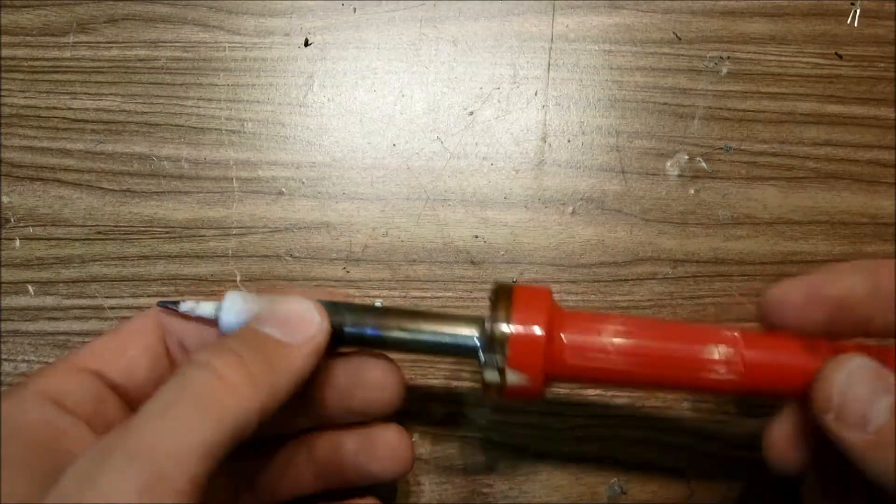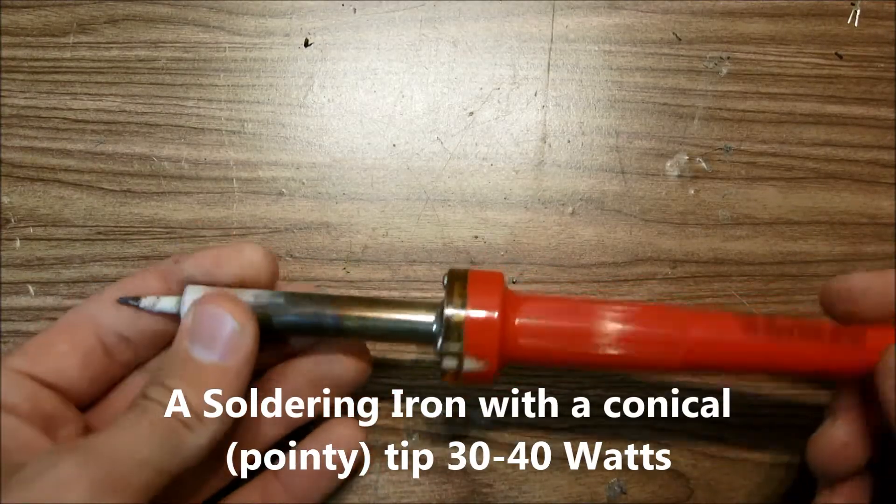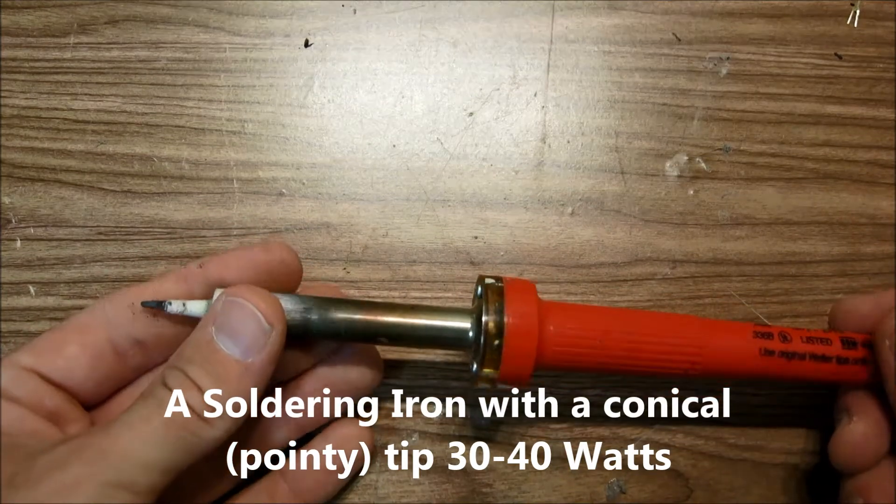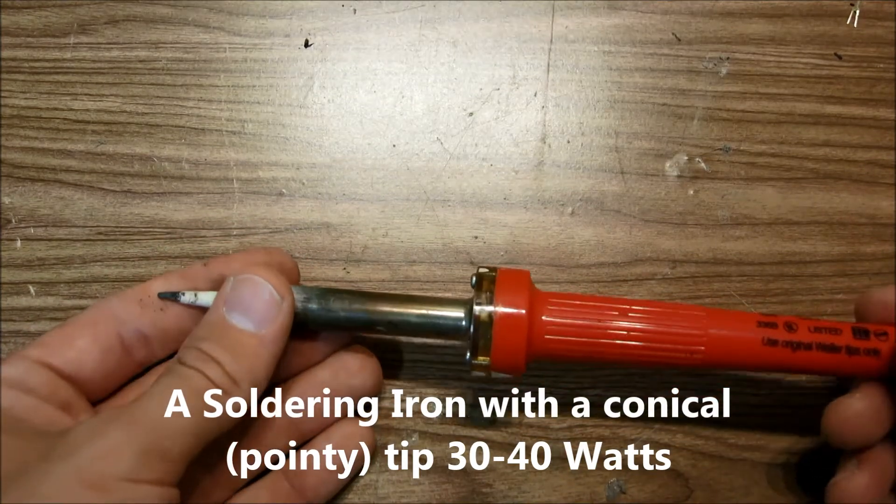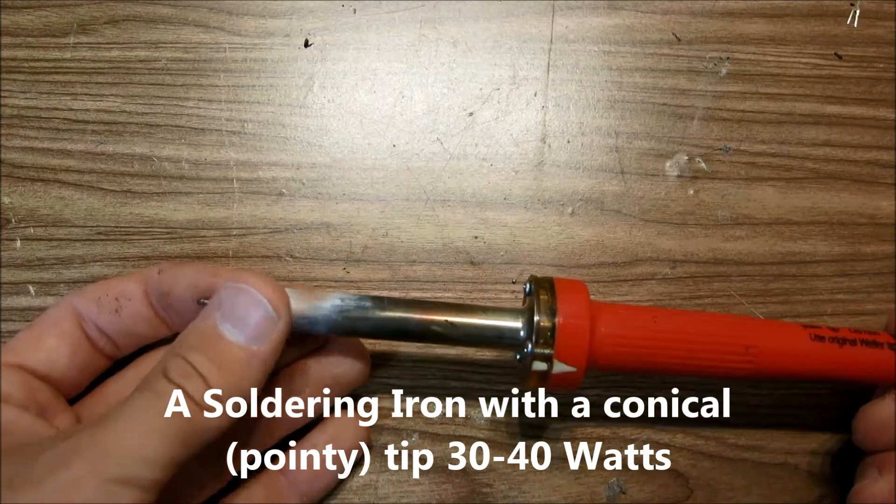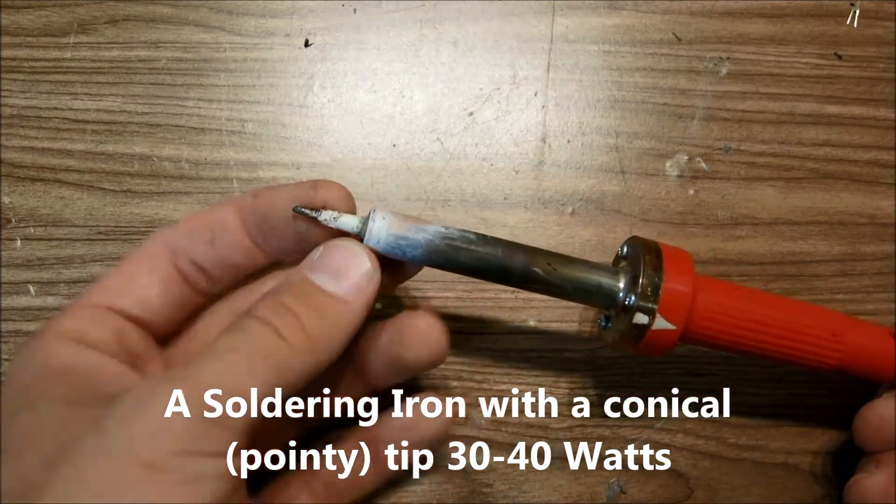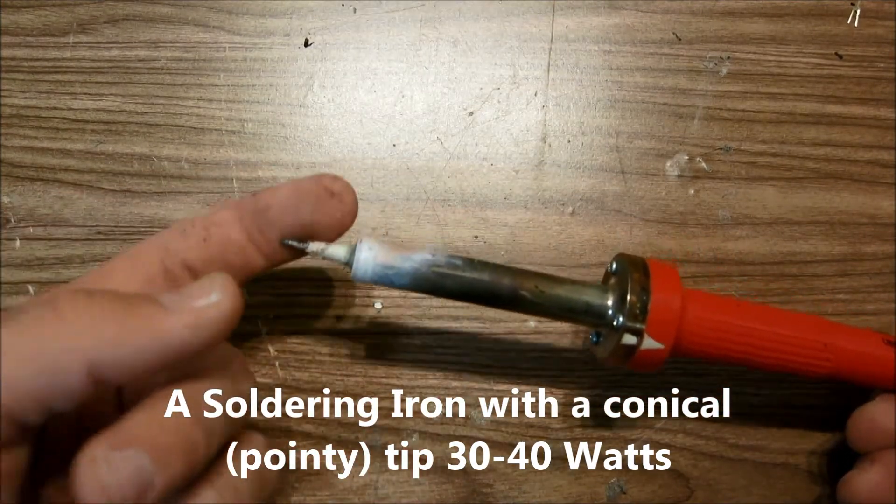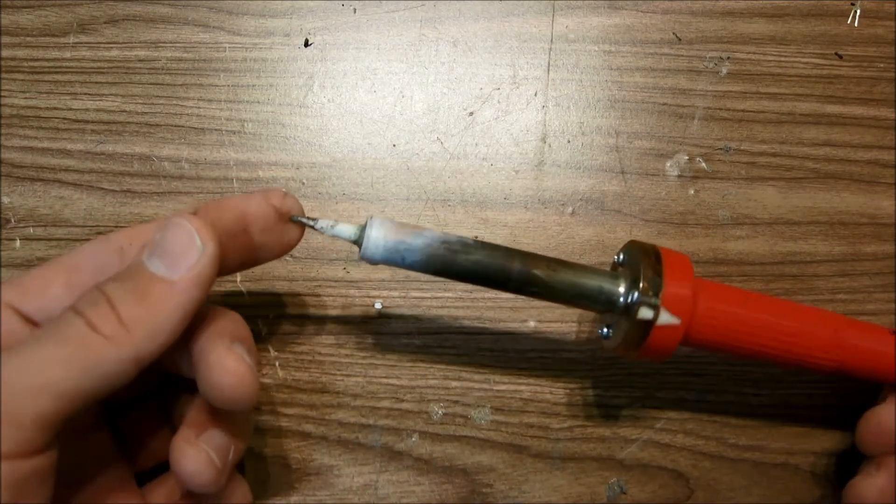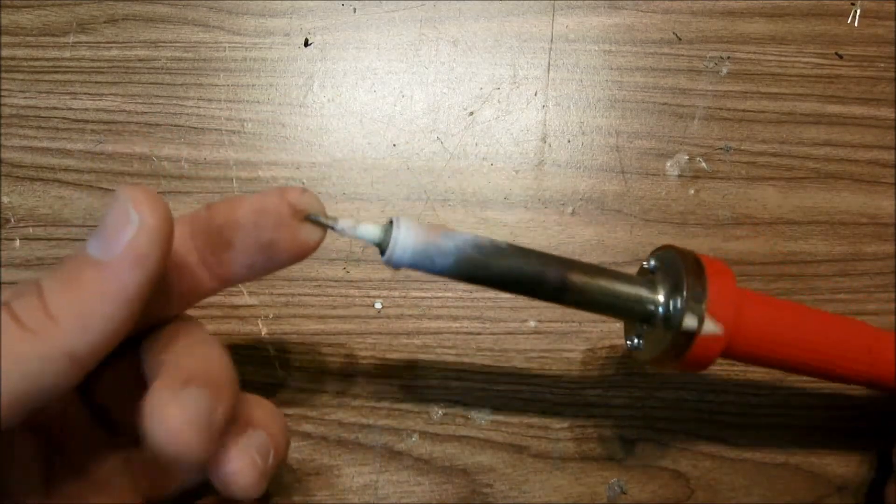So you will need a soldering iron. This is a 40 watt iron but I recommend somewhere around maybe a 35 or a 30 watt iron if you're just beginning to solder. I would recommend a fine point tip like this, a conical tip as opposed to a flat wide one. So get a fine point tipped soldering iron.